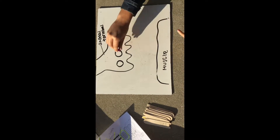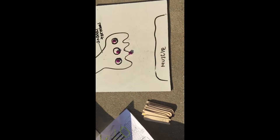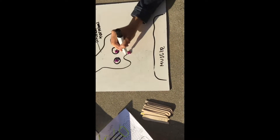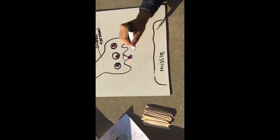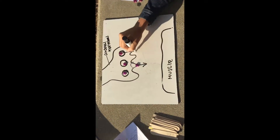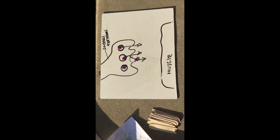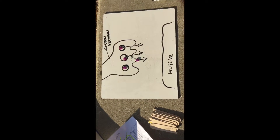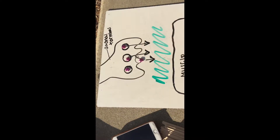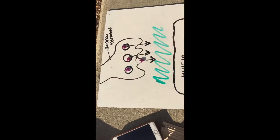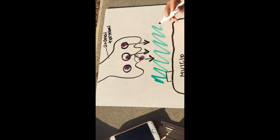Synaptic vesicles fuse with the axonal membrane and release the ACh into the synaptic cleft. This area here is the synaptic cleft. Then the ACh will bind to the receptors of the motor end plate.